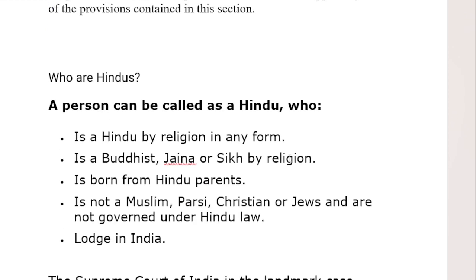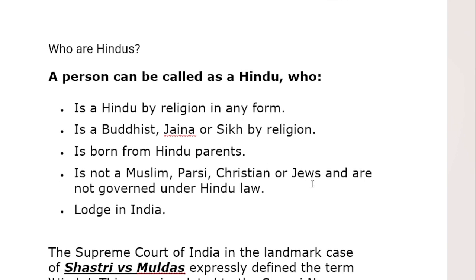To summarize who is Hindu in simple words: a person will be called Hindu if they are Hindu, Buddhist, Jain, or Sikh by religion; or if they were born in a Hindu family with Hindu parents; or if they are not Muslim, not Parsi, not Christian, and not a Jew — then we will consider them Hindu.